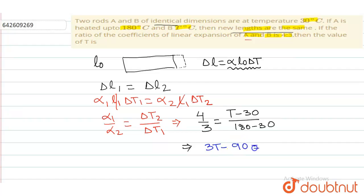I will cross multiply: it is going to be 3T minus 90 is equal to 720 minus 120.